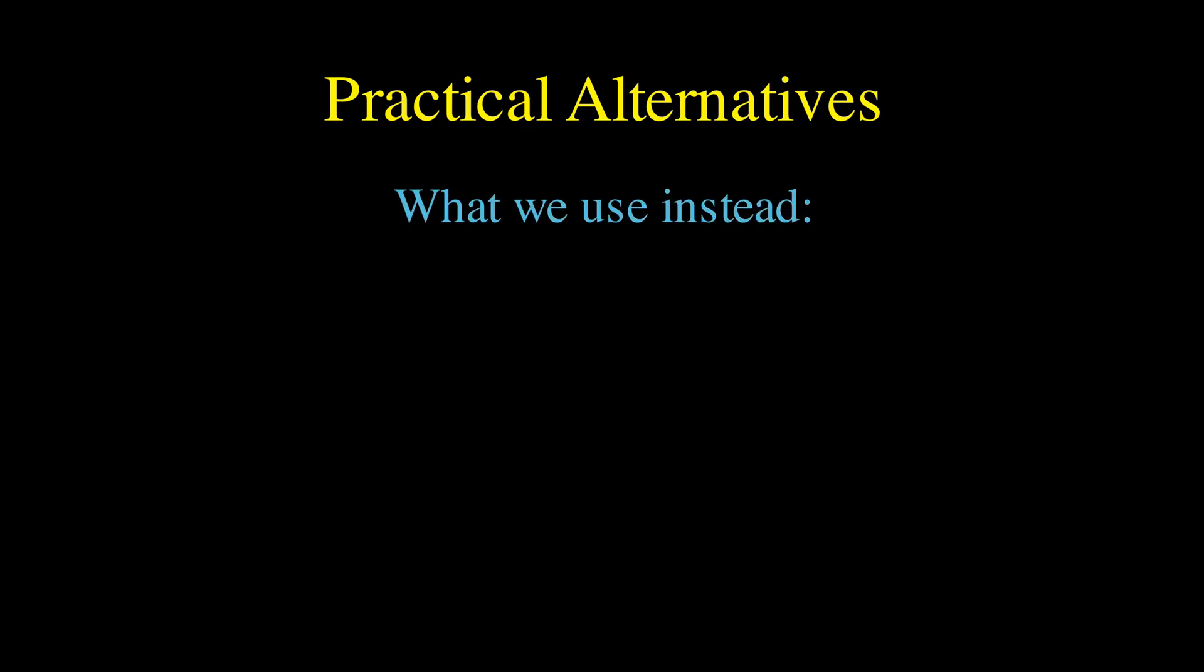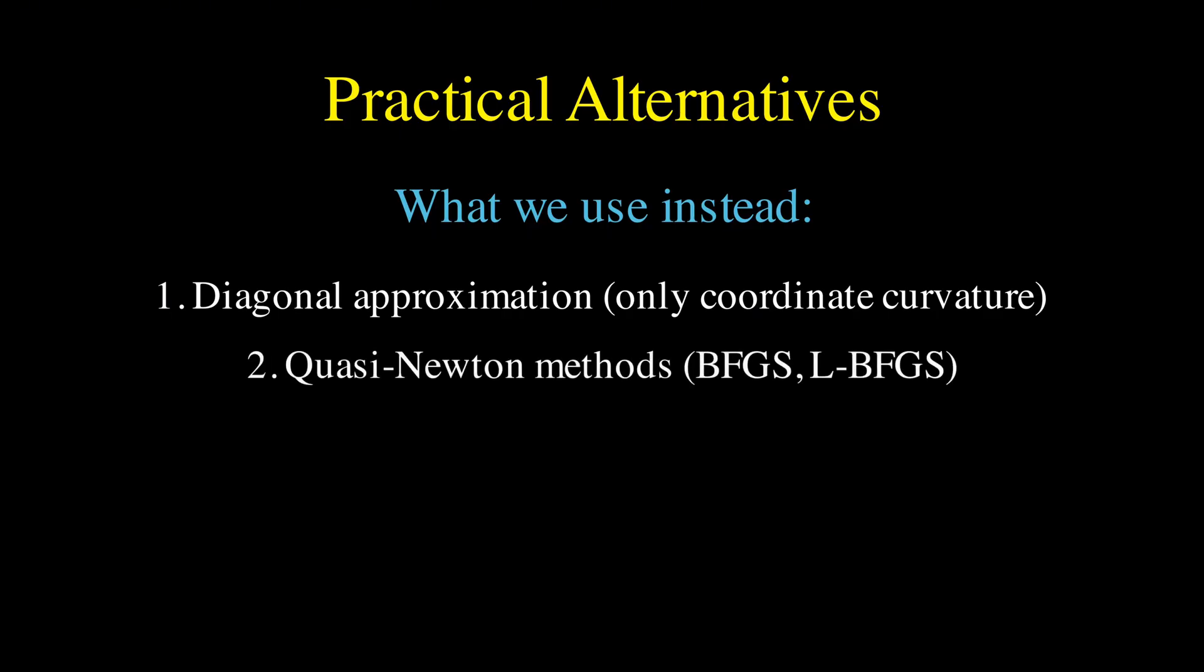So, what do we do instead? Well, researchers have developed various approximations. One approach is to use only the diagonal of the Hessian, which gives us some curvature information, but only in the coordinate directions, and this is much cheaper to compute. Another approach is quasi-Newton methods like BFGS and L-BFGS that build up an approximation to the Hessian over time using only gradient information, so they get some of the benefits of second-order methods without the computational cost.